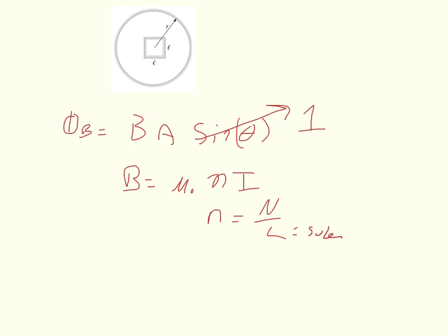So I can substitute N. The permeability of free space is equal to 4 times pi times 10 to the negative 7th.